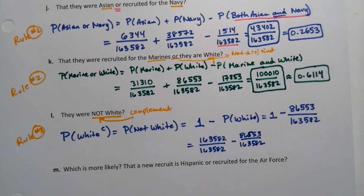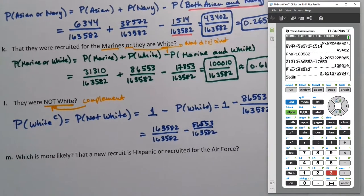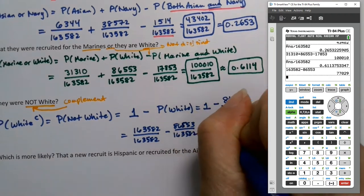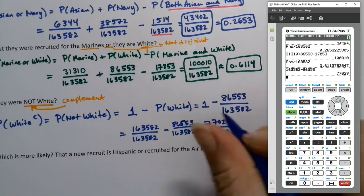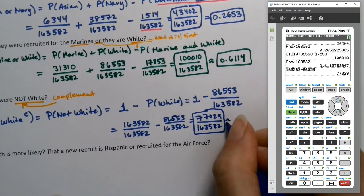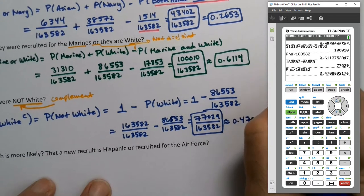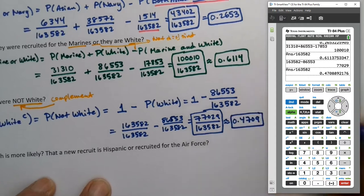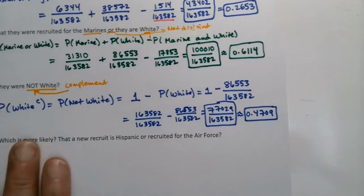All right. So if I grab the calculator and I tell it, hey, find 163,582 minus 86,553, it will do that. And it will tell me that it's 77,029. And I would divide that by 163,582. So this is perfectly valid as a probability, but if they want decimal places, then we can do that. And we get 0.4709 like that.